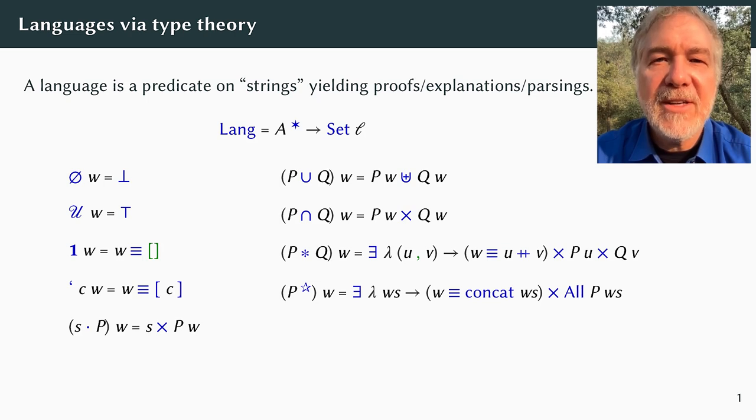Now, in case you are not used to AGDA, let me point out a few things. Bottom and top are the empty and singleton types. Logically, they correspond to falsity and truth.